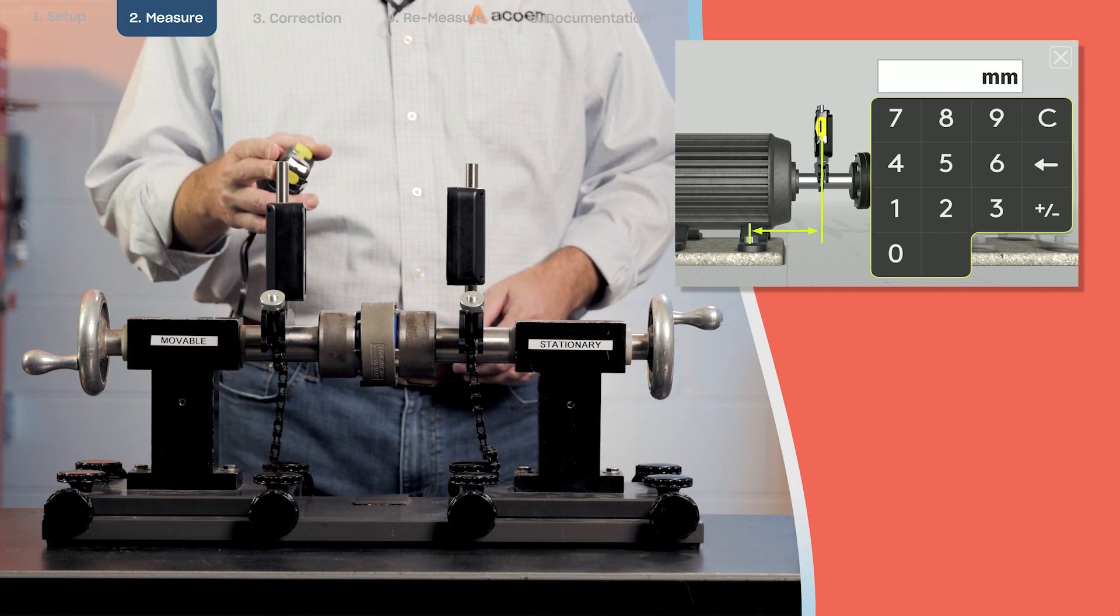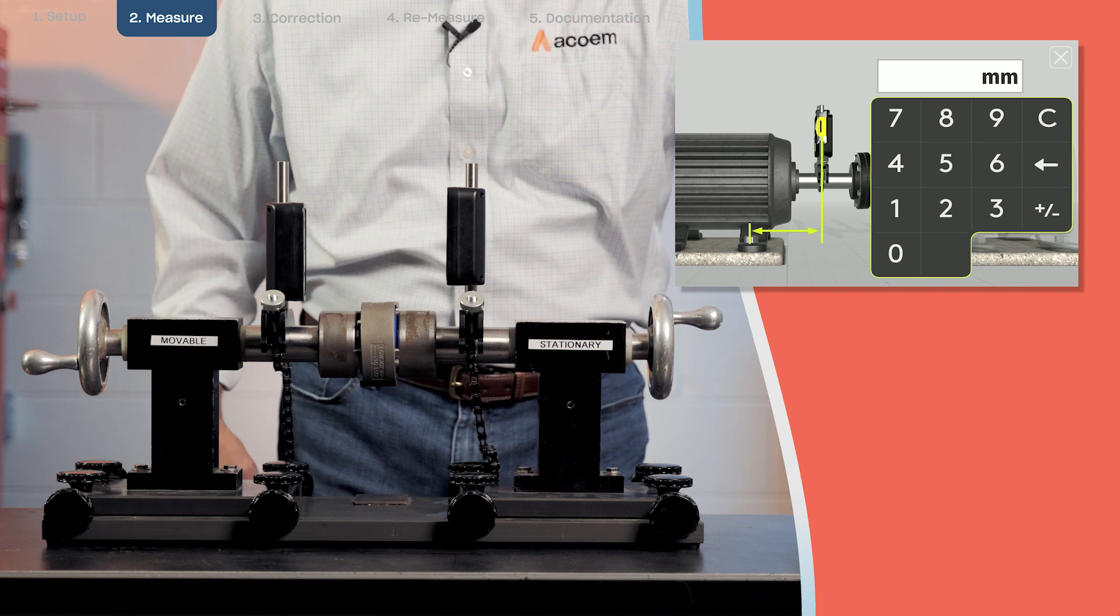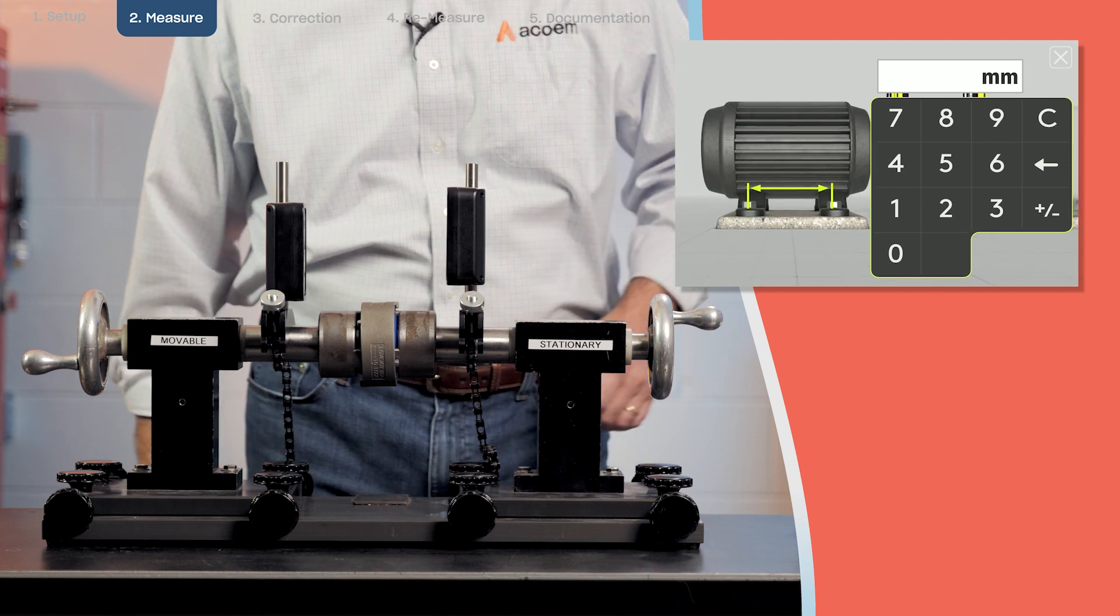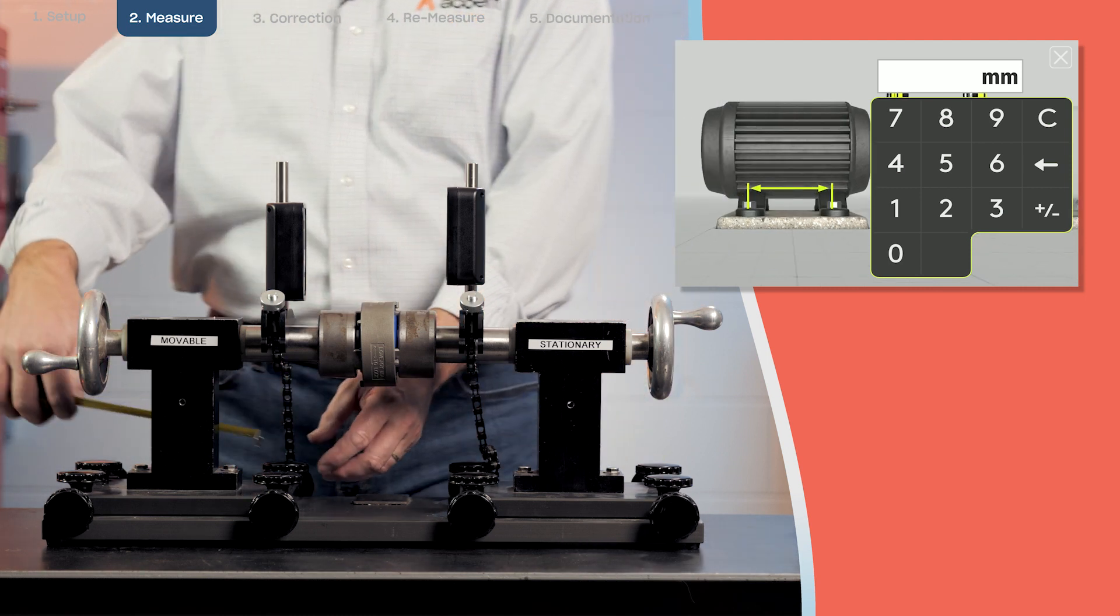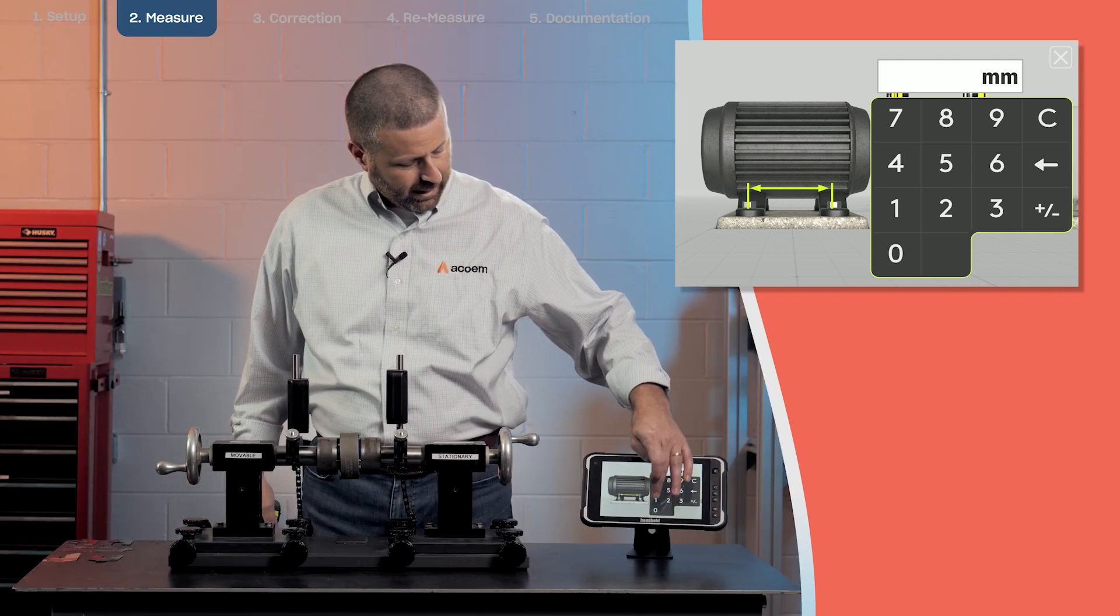From M sensor to the front feet of the movable machine in this case is zero. And then from front feet to rear feet is 180.